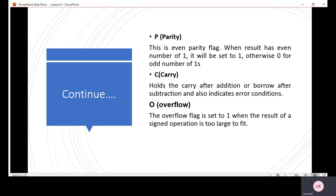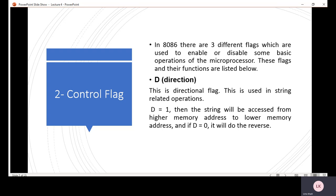Overflow flag: अगर overflow equals 1 होता है तो overflow occurred, aur agar zero hai to no overflow occurred. Then we move to the control flag. Control flag basically three different flags पर depend करता है, which are used to enable or disable some basic operations of the microprocessor.